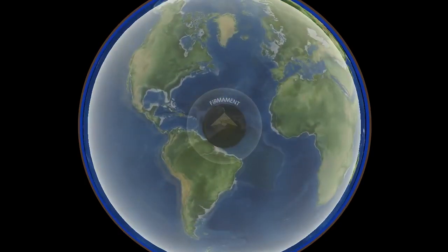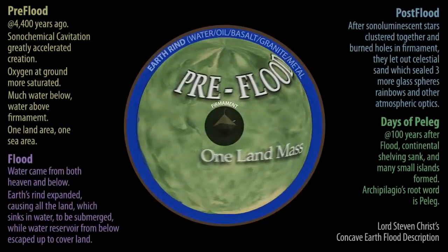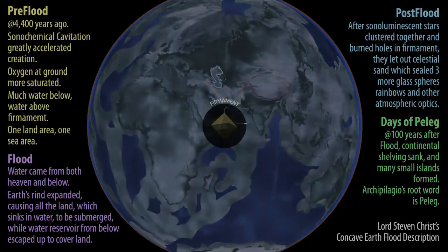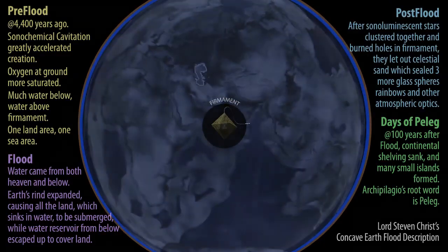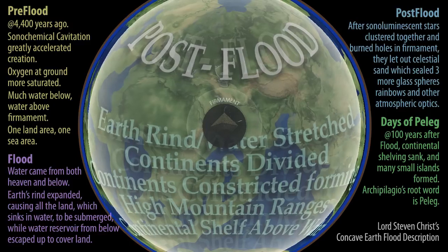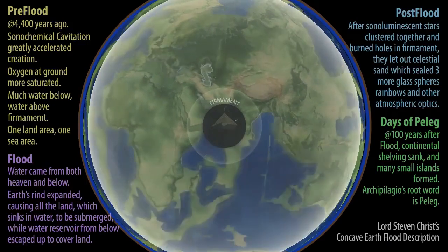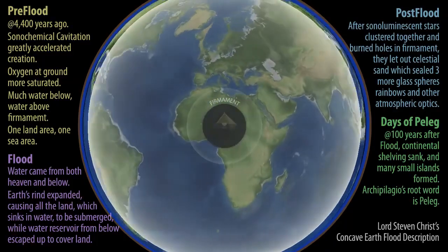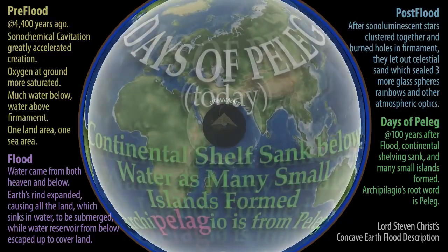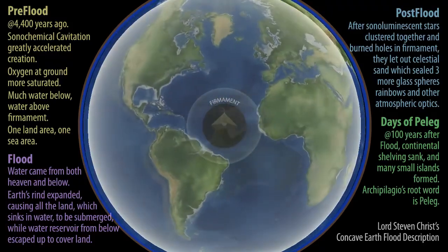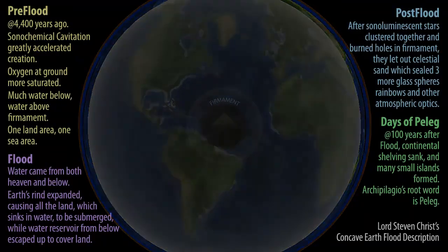Prior to the flood happening, the waters from above began to build up within the celestial sphere, and there happened to be an occurrence where enough was enough. The sonoluminescent stars congealed it together within the celestial sphere and formed holes — spiral drains. The water came out, and there was also celestial sand, a lot of it at the bottom of the celestial sea, that also came out.